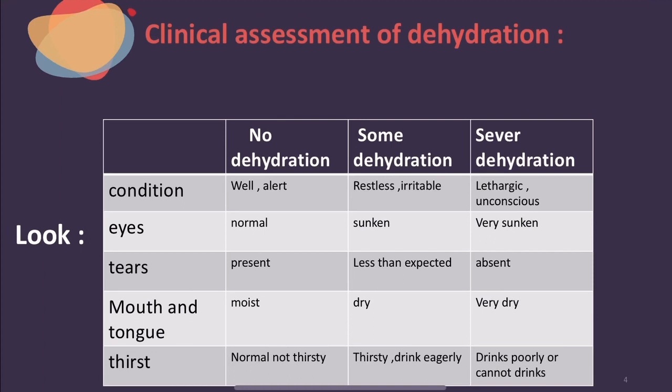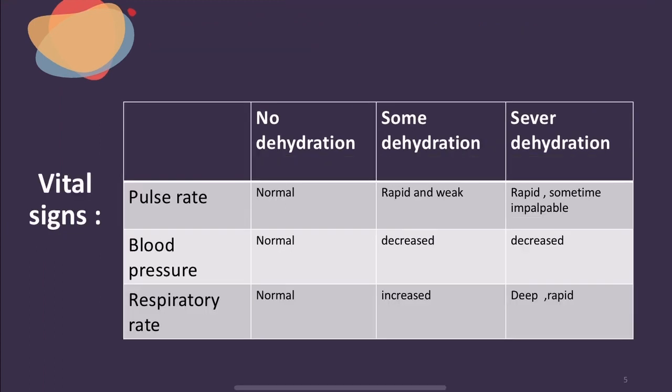For vital signs: in no dehydration, pulse, blood pressure, and respiratory rate are all normal. In some dehydration, the pulse is rapid and weak, blood pressure may decrease, and respiratory rate increases. In severe dehydration, the pulse is sometimes impalpable and respiration often reaches acidotic breathing, which is typically deep breathing.